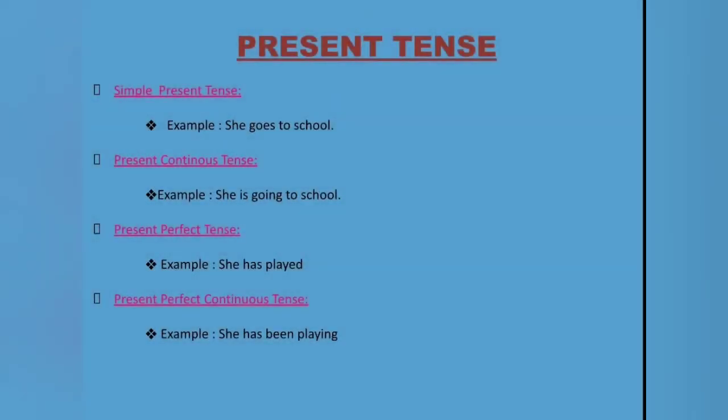Present tense. Simple present tense: she goes to school. Present continuous tense: she is going to school. Present perfect tense: she has played. Present perfect continuous tense: she has been playing.